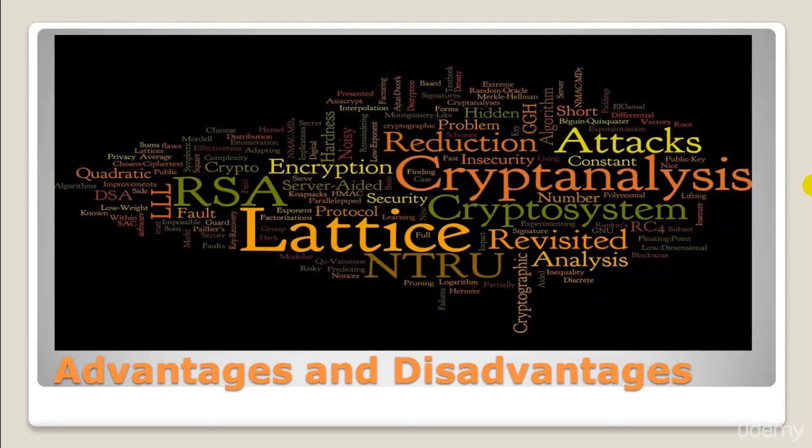Mary first encrypts her name using her private key, then encrypts the request along with the encrypted name using ABC's well-known public key. When ABC receives the message, it decrypts the request using its private key, then decrypts the signature using Mary's well-publicized public key. If the name decrypts successfully, it must be Mary's signature, since she is the only one who could have encrypted it with her secret private key. The request can then be safely processed. Digital signatures are gaining popularity in internet transactions involving signature verification, such as contracts, legal negotiations, and code documents.